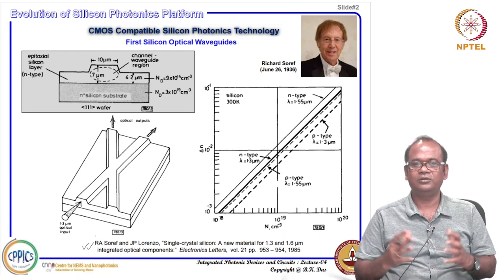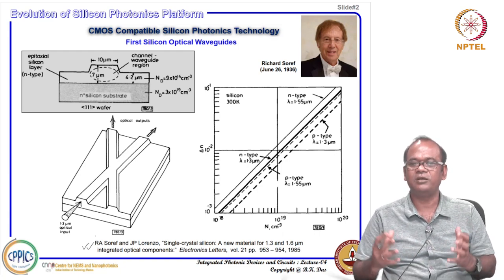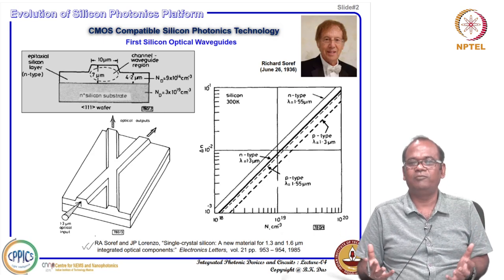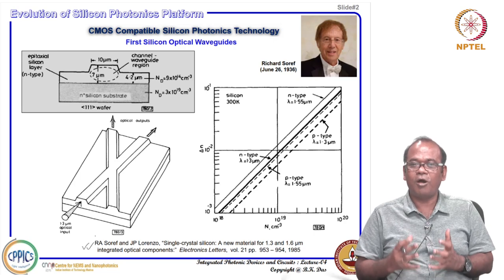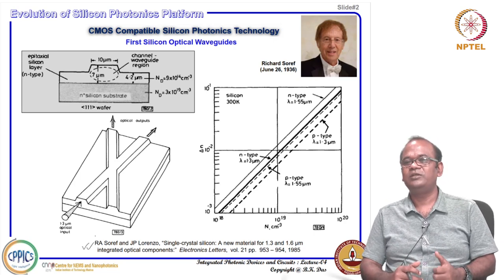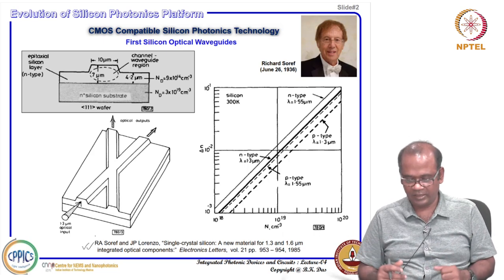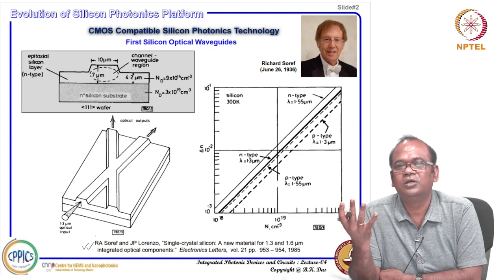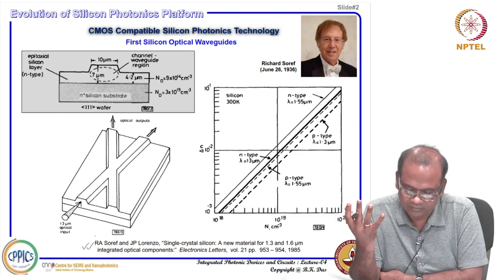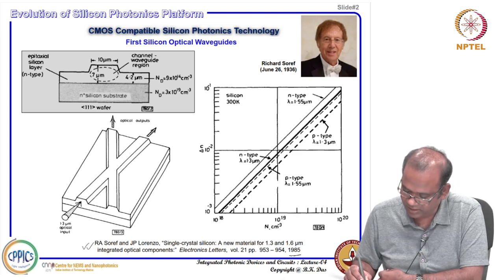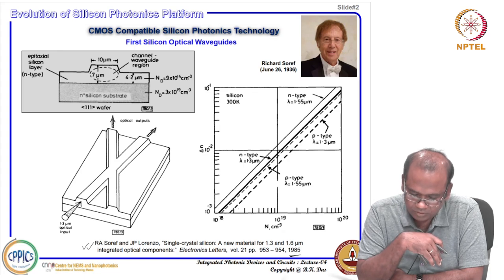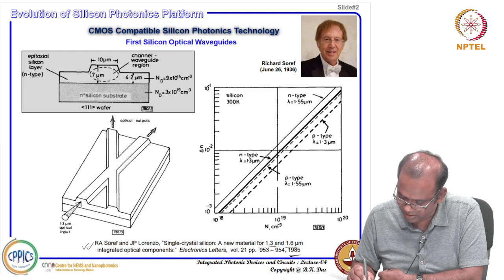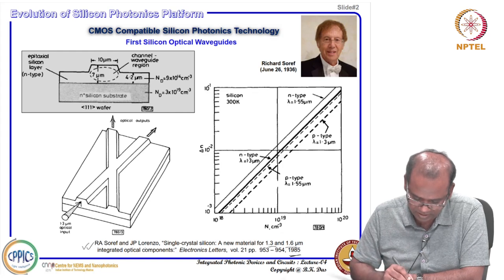For the first time, they demonstrated an optical waveguide in bulk silicon. As we know, the waveguide is the basic building block. Without a low-loss waveguide — like how low-loss glass fiber helped for long-haul communication — on-chip optical waveguide opens the prospect of optical interconnect. So it was a challenge to fabricate an optical waveguide in silicon. This was first reported in 1985, about 35 years ago, in single crystal silicon — described as a new material for 1.3 and 1.6 micrometer integrated optical components.